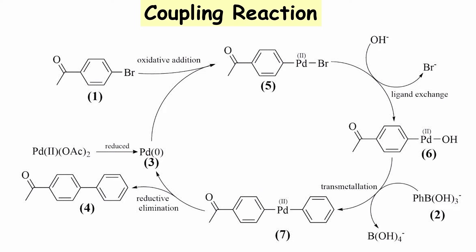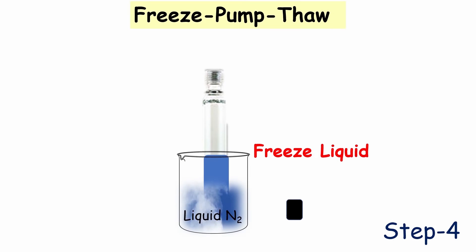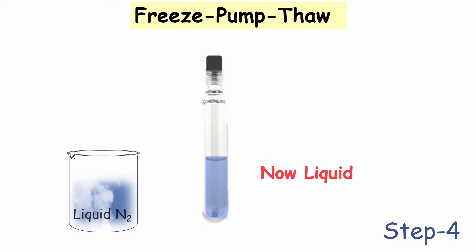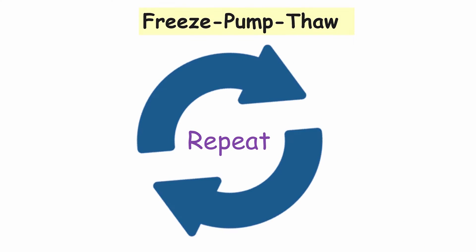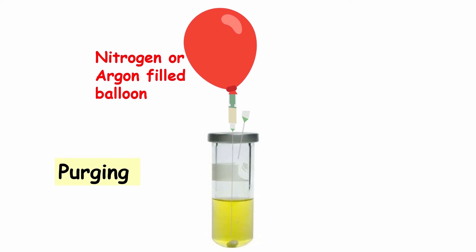The other type of reaction which needs to be degassed is organometallic reactions — mostly coupling reactions. An oxygen-free environment is very essential in organometallic reactions like the Suzuki reaction, Heck coupling, or Buchwald reaction. Degassing-sensitive catalysts typically require 10 cycles of freeze-pump-thaw or purging for degassing. These techniques we are going to discuss later in this video.